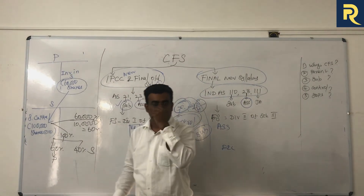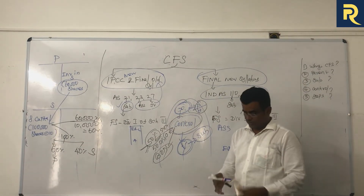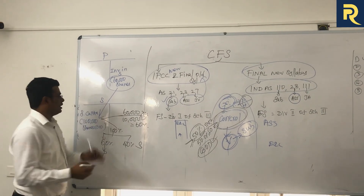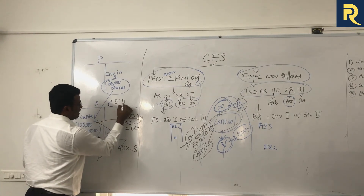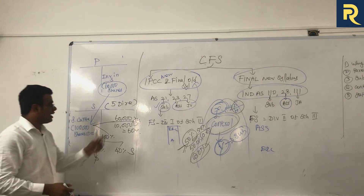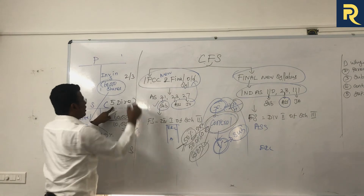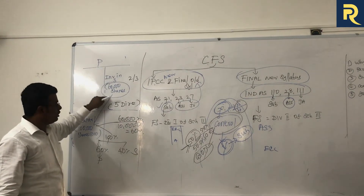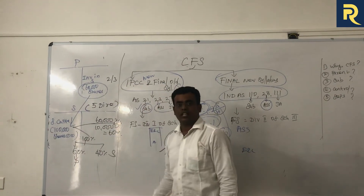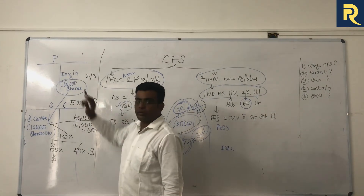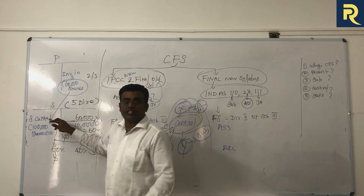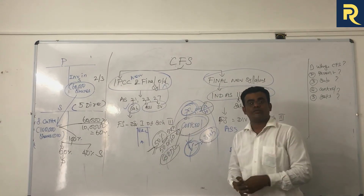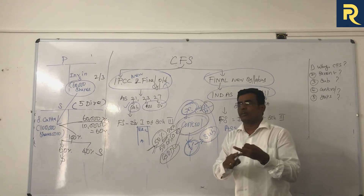Another case: S Limited has a total of 5 directors. 2/3 or more of those directors can be appointed by P Limited - control comes to P Limited. Majority of directors are appointed by P Limited, so ultimately P Limited has the same control. So now we understand that control comes in two ways: one by way of share holding pattern, and another by way of controlling over the majority of the board of directors. When it comes to examination point of view, the question will always be based on share holding pattern.